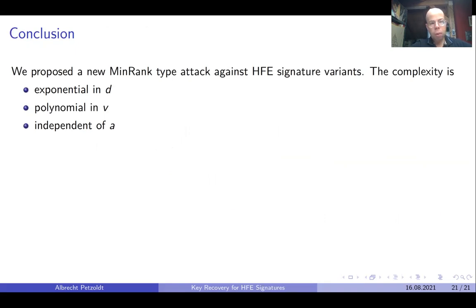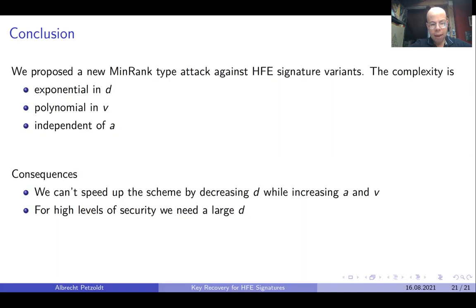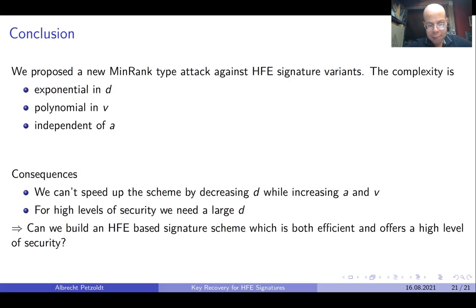To conclude, in our paper we proposed a new min-rank style attack against the HFE signature variants. The complexity of our attack is exponential in d but polynomial in v, the number of vinegar variables, and independent of the number of minus equations a. As a consequence, we cannot speed up the scheme by decreasing D while increasing a and v, as done in Blue-GEMS and Red-GEMS. For high levels of security we need a very large value of d, which reduces the efficiency of the scheme. Therefore, the question arises whether we can build an HFE-based signature scheme that is both efficient and offers a high level of security. Thank you for your attention.